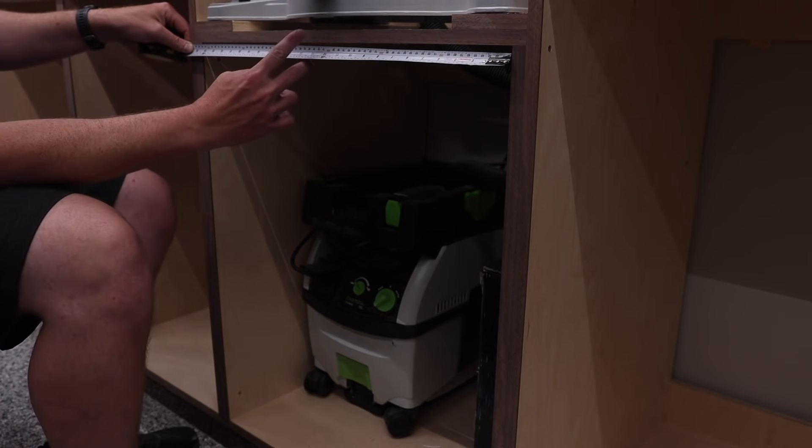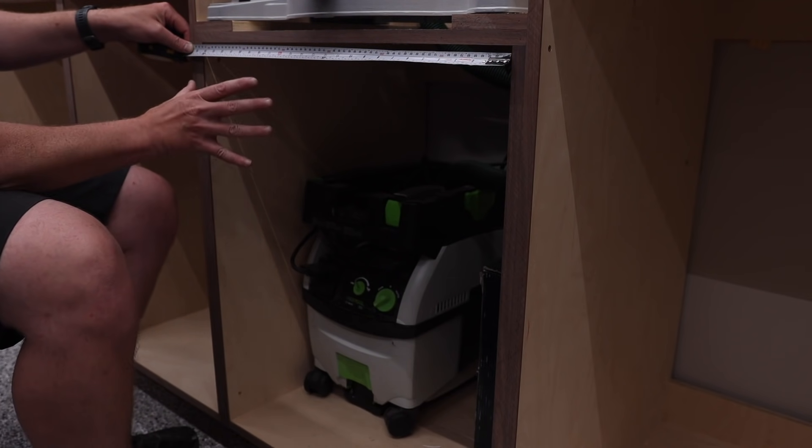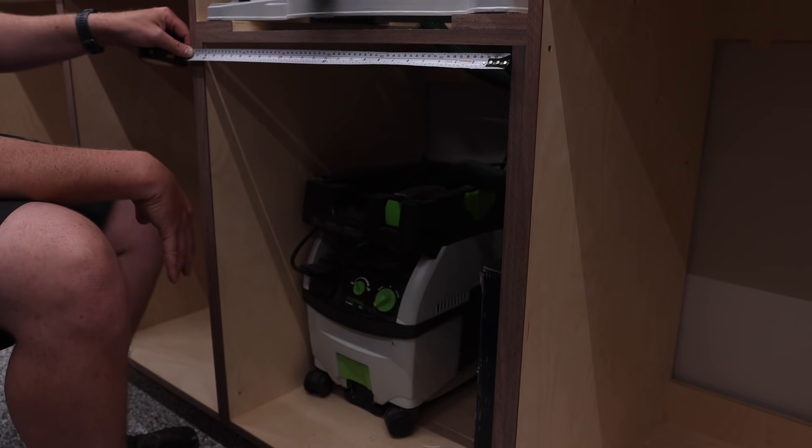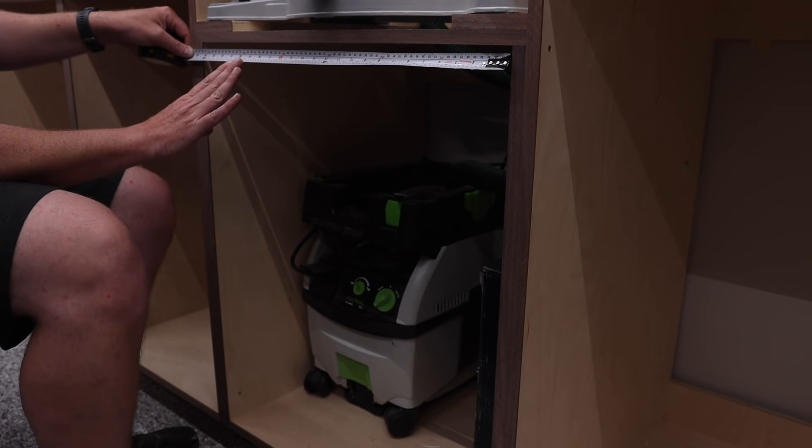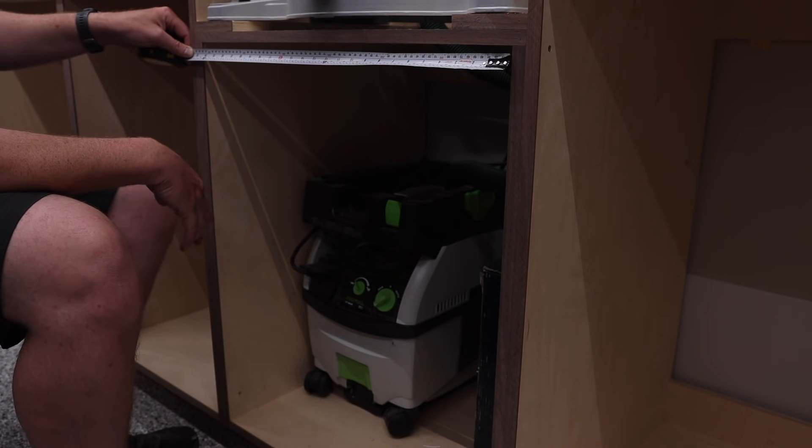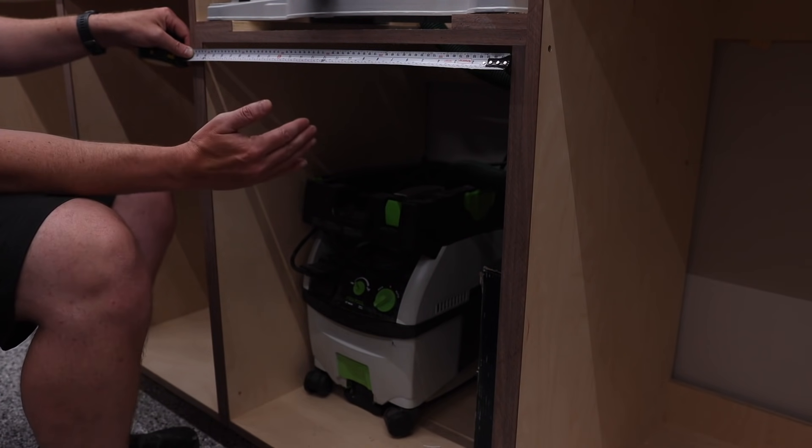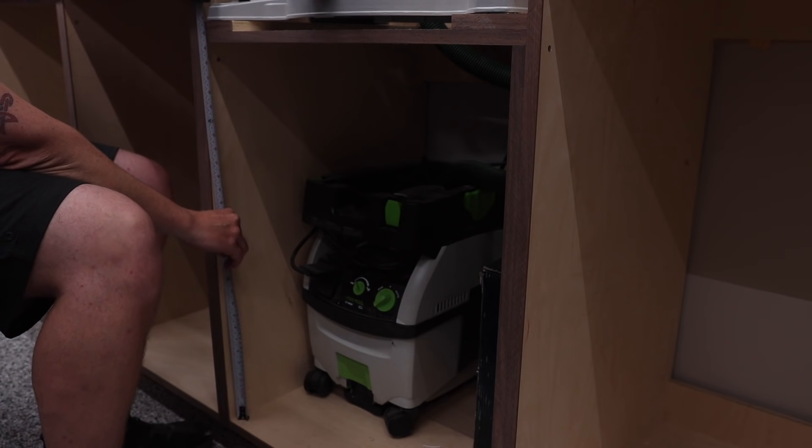So if I like a two millimeter reveal, I'm going to subtract two for this side and two for this side. And then I want to take two for the center. I don't want two on each piece. I just want two for the center because I'm going to break this up into two doors. So 622 minus two is 620 minus two is 618 and minus two for the center is 616. So now I can take 616 and I can divide that by two. 616 divided by two is 308. So I know that each one of my doors, the width needs to be 308 millimeters.